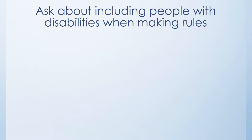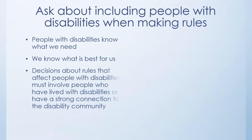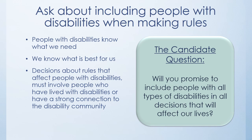Ask about including people with disabilities when making rules. People with disabilities know what we need — we know what is best for us. Decisions about rules that affect people with disabilities must involve people who have lived with disabilities or have a strong connection to the disability community. Candidate question: Will you promise to include people with all types of disabilities in all decisions that will affect our lives?